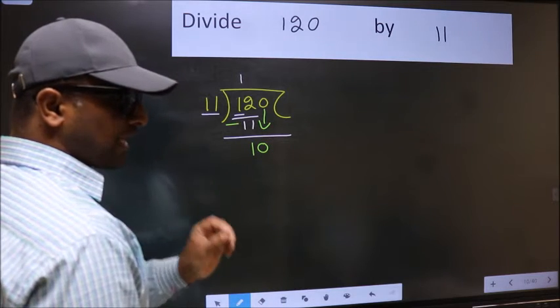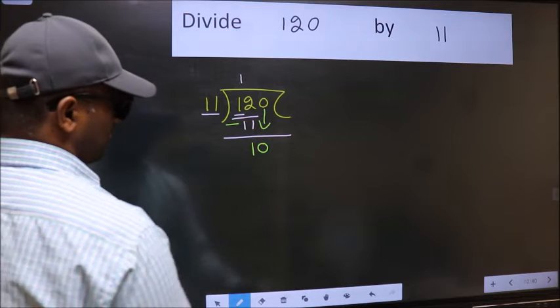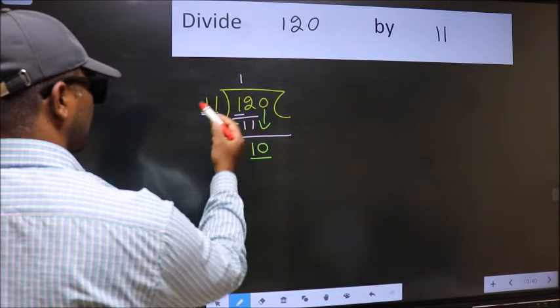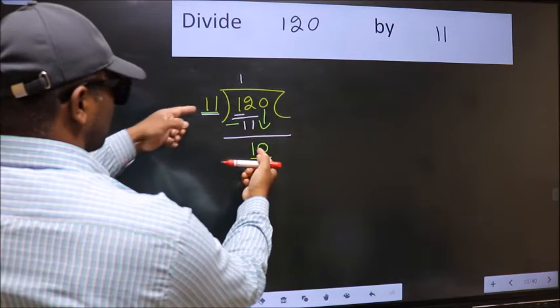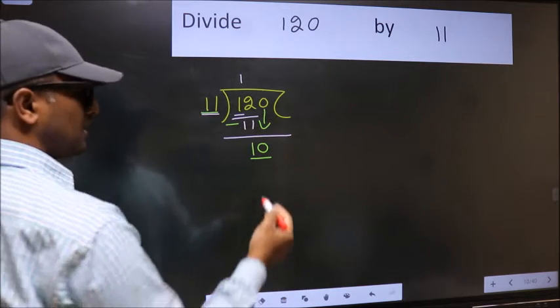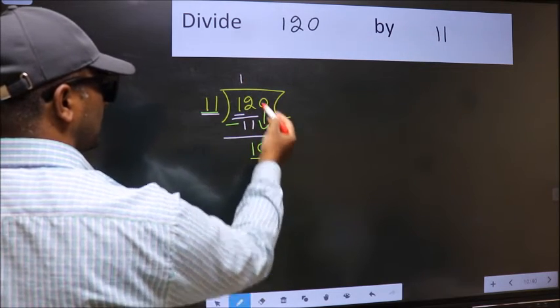After this step, the mistake happens. And the mistake is this. Here we have 10 and here 11. 10 is smaller than 11. So what many do is, they directly put dot and take 0.